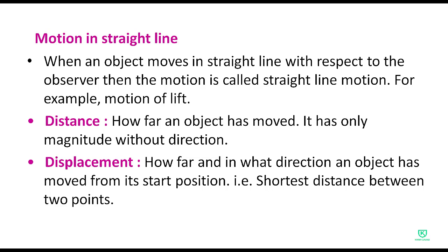Next is displacement — how far and in what direction an object has moved from its start position. That is the shortest distance between two points. Displacement mein bhi kitni door hai, lekin isme ek aur cheez juri jati hai — woh hai direction. Displacement is final position minus initial position of the object. Dono points ke beech sabse chota distance hota hai displacement.